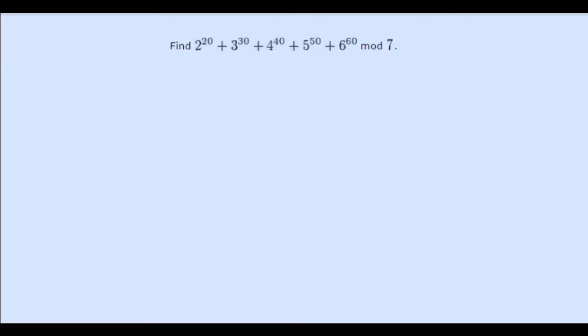Hi guys, it's Daniel here, and today we're going to solve this little problem. Find 2 to the power of 20, plus 3 to the power of 30, plus 4 to the power of 40, plus 5 to the power of 50, plus 6 to the power of 60, mod 7.